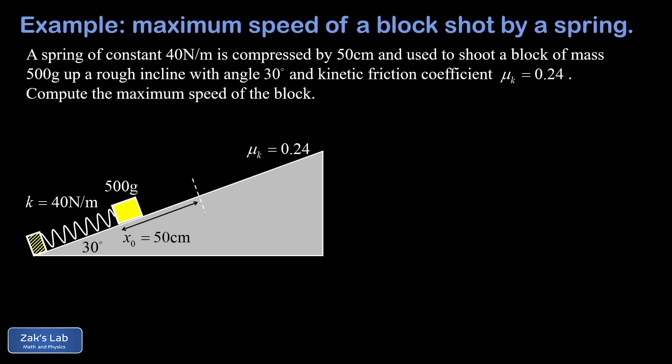In this video we're solving an unusually challenging conservation of energy problem that I put on a recent problem set for one of my physics courses. At first glance it looks like a pretty innocent energy conservation problem — we have a rough incline so we have to deal with friction, there's a mass on this incline, we've compressed it against a spring with a given constant, and we're given the initial compression distance and the angle of incline. So at first glance we're thinking we're just going to write down E_initial plus the work done by friction equals E_final. But the question I'm asking is a little unusual — instead of asking for the maximum height this thing slides up the ramp, I'm asking for the maximum speed of the block.